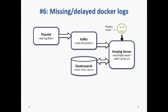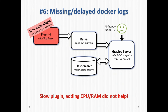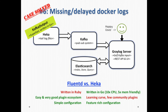With more apps onboarded at higher scale, we started facing missing or delayed logs. The problem was a slow Fluentd Kafka plugin — it was designed to be simple but not fast. Adding more CPU or RAM did not help, so we were looking for alternatives. I found a project called Heka — a Mozilla-sponsored project written in Go. It was 5x CPU friendly, 10x memory friendly, and handled this without losing messages. The missing/delayed Docker logs problem was solved.